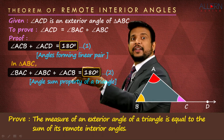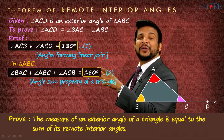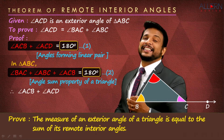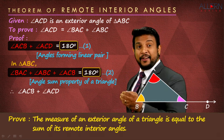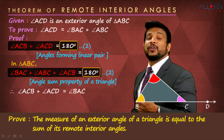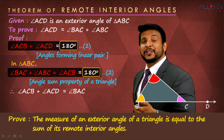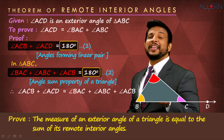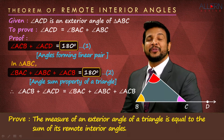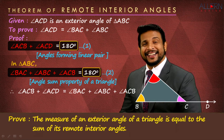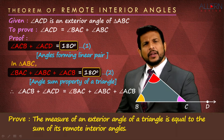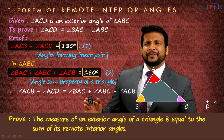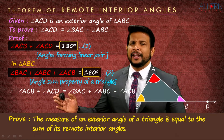If the right-hand sides are equal, then the left-hand sides must be equal. So let's equate the left-hand sides: angle ACB plus angle ACD equals angle BAC plus angle ABC plus angle ACB. We wrote that — so simple.